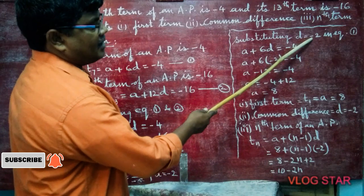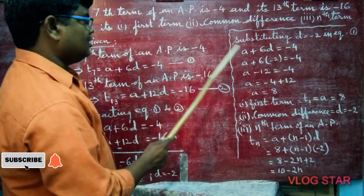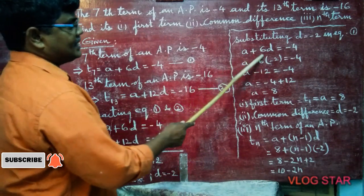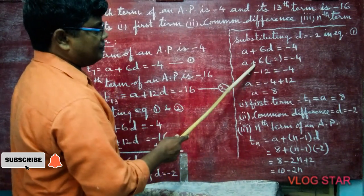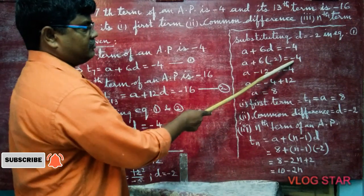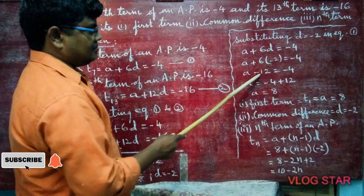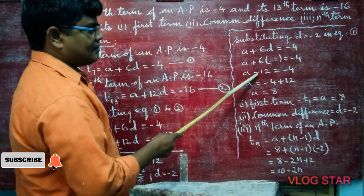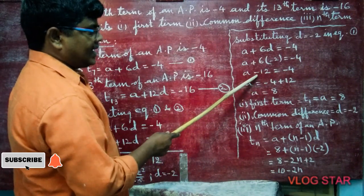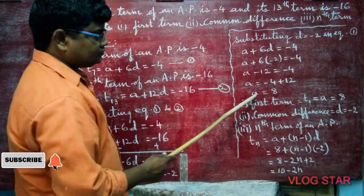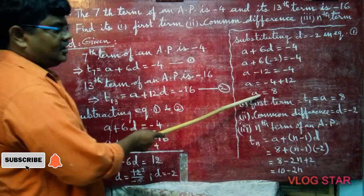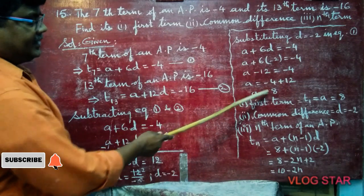Substituting D equals minus 2 into equation 1 (you can use equation 2 as well — your choice): A plus 6D equals minus 4, so A plus 6 times minus 2 equals minus 4. That gives A minus 12 equals minus 4. Moving minus 12 to the right side as plus 12: A equals 12 minus 4, so A equals 8. We have found the value of A.